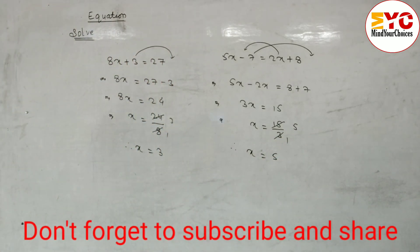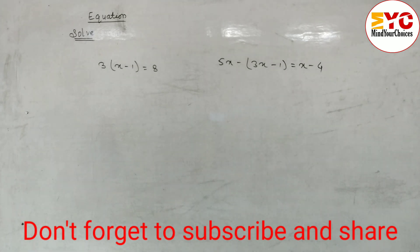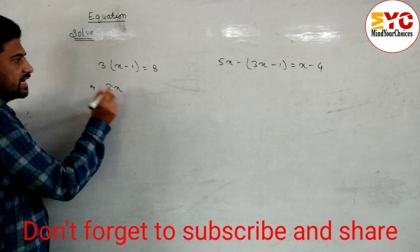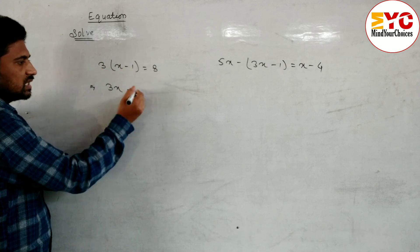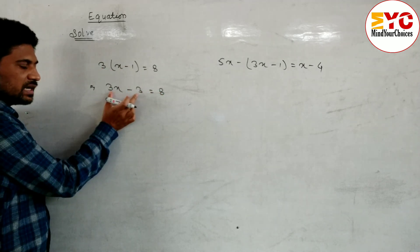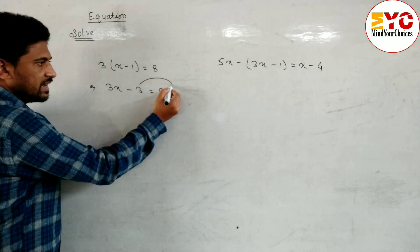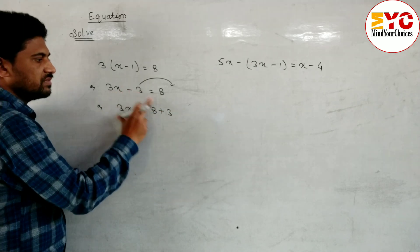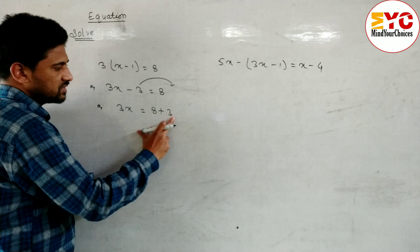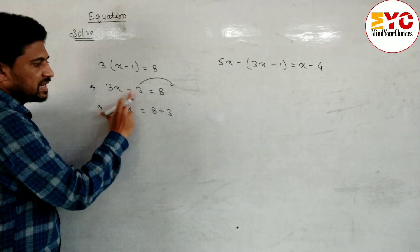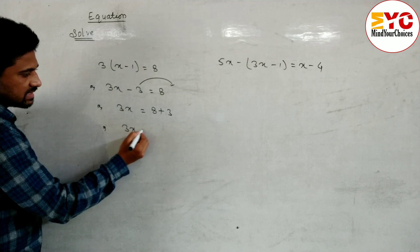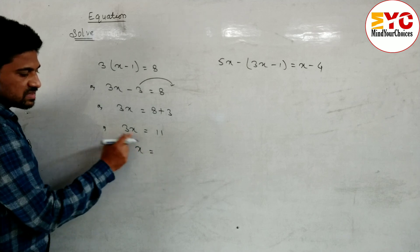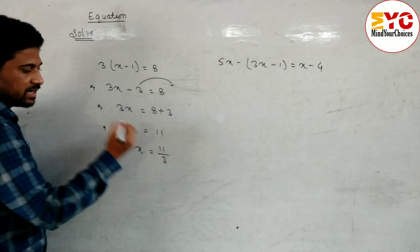Hope you understand these two questions. Now look at next. The next question: 3(x minus 1) is equal to 8. First of all open the bracket — 3 into x is 3x, minus 3 into 1 is 3, is equal to 8. These two are unlike terms so we have to arrange like terms. So 3 we have to take at last. We can write 3x is equal to 8 plus 3. If here is minus 3 we have to write plus 3; if here is plus 3 we have to write minus 3 — we have to change the sign. Or 3x is equal to when you add these two we get 11.